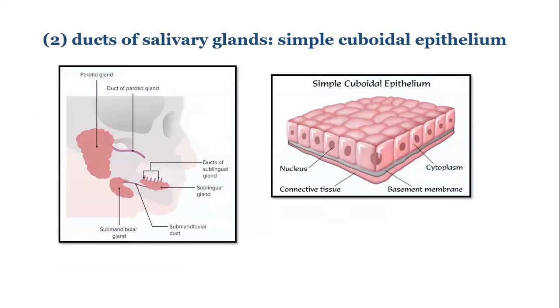In the ducts of the salivary gland, simple cuboidal epithelium is present. As you can see, the cuboidal epithelial cells are thick, and these facilitate the passage of salivary gland secretions.